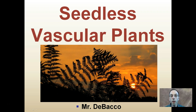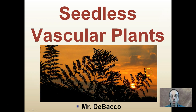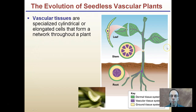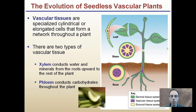As we go along, we're getting a little bit more complex through our plant evolution, and we're at the point of seedless vascular plants. You may be familiar with the most common example — ferns fall into the category of seedless vascular plants. When I use the term vascular, you might be wondering what does this refer to. Vascular tissues are specialized cylindrical or elongated cells that form a network throughout the plant.